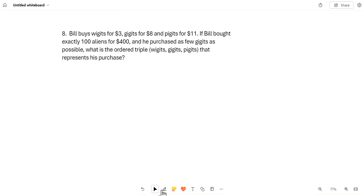The next question is question 8, and it says, Bill buys widgets for $3, Gidgets for $8, and Pidgets for $11. If Bill bought exactly 100 items, which are widgets, Gidgets, and Pidgets, for $400, and he purchased as few Gidgets as possible, what is the ordered triple widgets, Gidgets, Pidgets that represents his purchase?